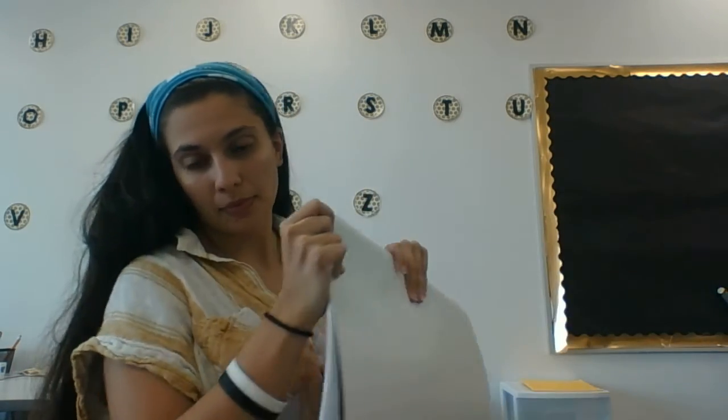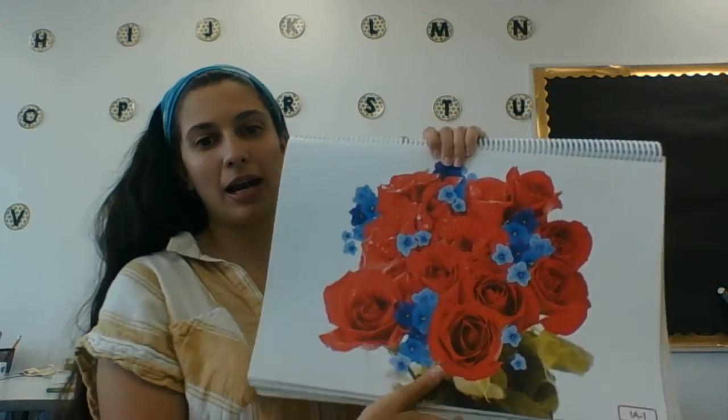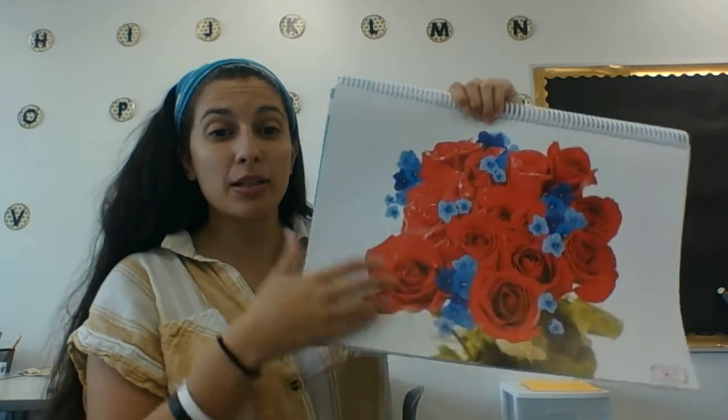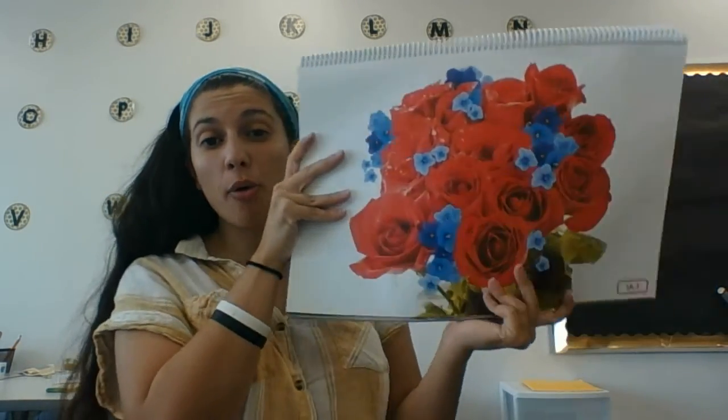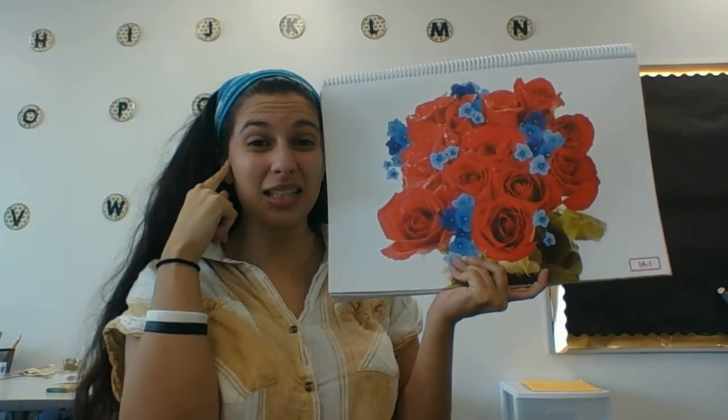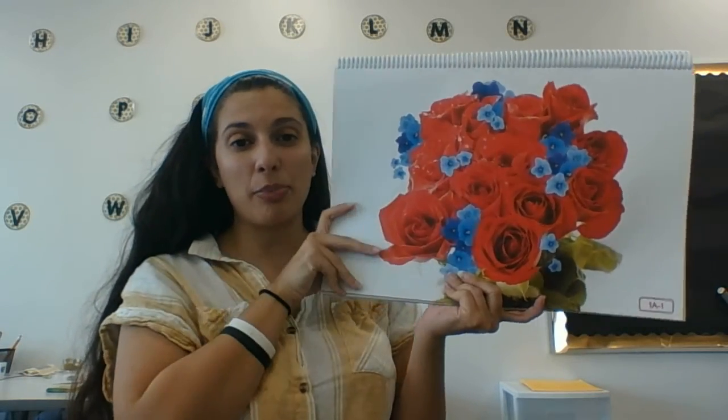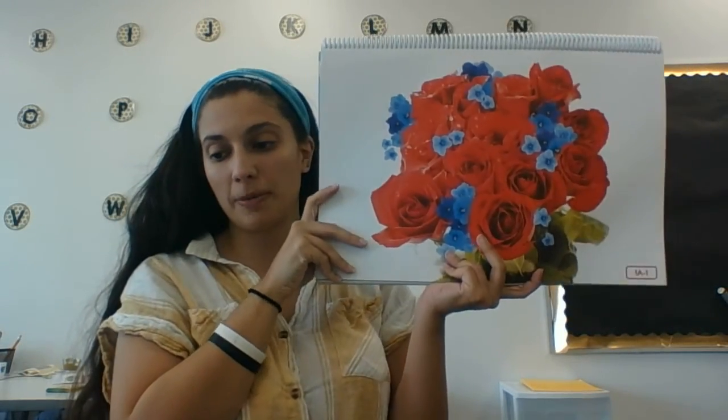Now we're going to get started and look at our first nursery rhyme. These books don't have any words — you'll see they're just pictures — and I have my book that tells me what the words are. The important job for you right now is to listen and look at the pictures.